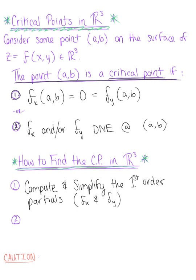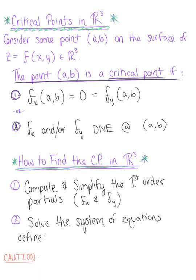Step two: solve the system of equations created by setting both partial derivatives equal to zero. So we solve the system defined by setting the partial derivative with respect to x equal to zero and the partial derivative with respect to y equal to zero, solving for the ordered pair (x, y).